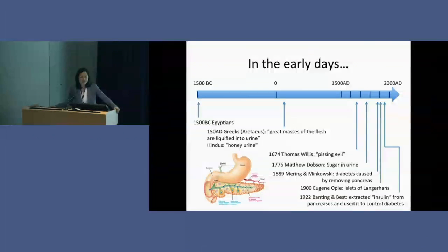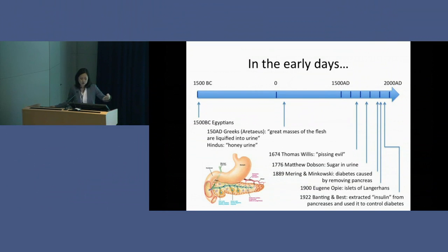There's no better place to begin than at the very beginning. This is a timeline of the history of what we know about diabetes today. As far back as 1500 BC, on papyrus leaves, there were obvious descriptions of an illness that looked like diabetes. It was also described in Greek literature by Arataeus, probably the forefather of modern medicine, where he described an illness where great masses of the flesh are liquefied into urine. Around the same time in Hindu literature there was a description of an illness with honey urine.